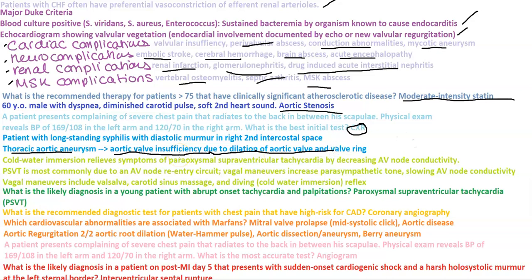Cold water immersion relieves symptoms of paroxysmal supraventricular tachycardia by decreasing AV node conductivity. PSVT is most commonly due to an AV node re-entry circuit. Vagal maneuvers increase parasympathetic tone, which slows down AV node conductivity. Vagal maneuvers include valsalva, carotid sinus massage, and diving — the cold water immersion reflex. The likely diagnosis in a young patient with abrupt onset tachycardia and palpitations is paroxysmal supraventricular tachycardia.